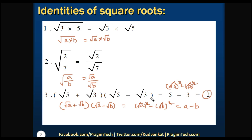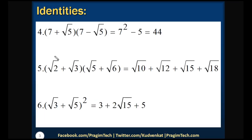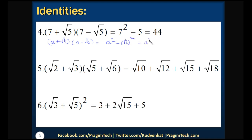Let us list out some more identities. When you look into this, it is in the form of a plus root b into a minus root b. This equals a squared minus root b whole square, based on the identity of a plus b into a minus b. Canceling out square and square root gives a squared minus b. For the example, it is 7 squared minus root 5 whole square, which gives 49 minus 5, that is equals to 44.